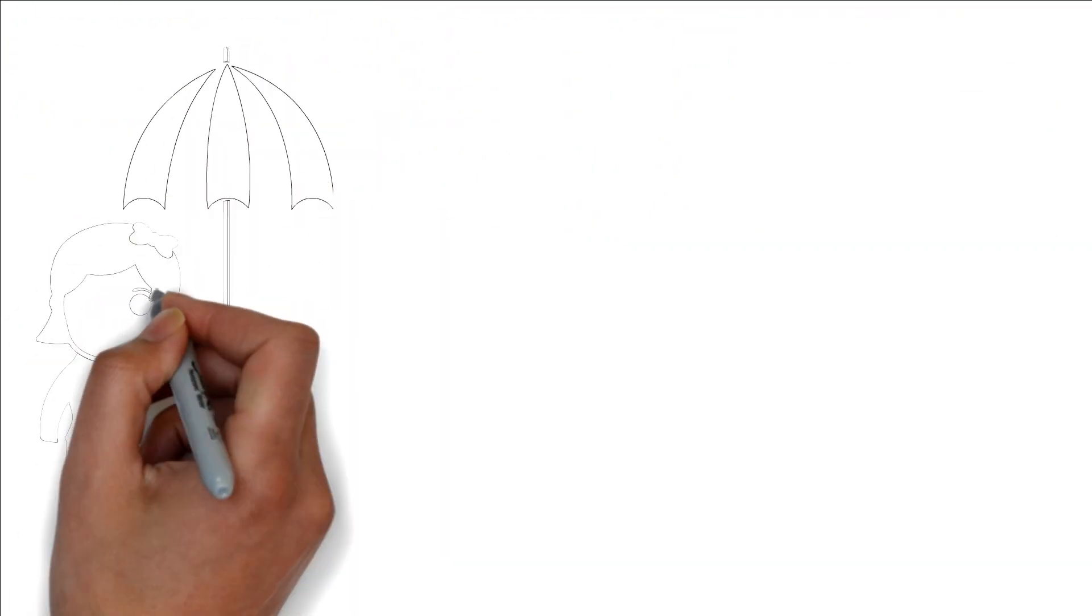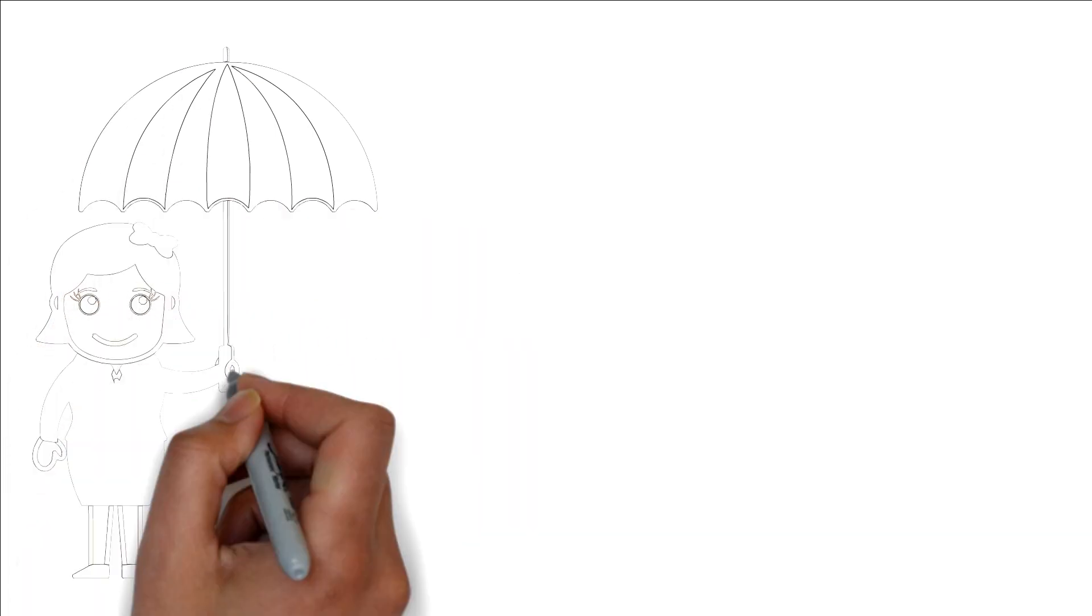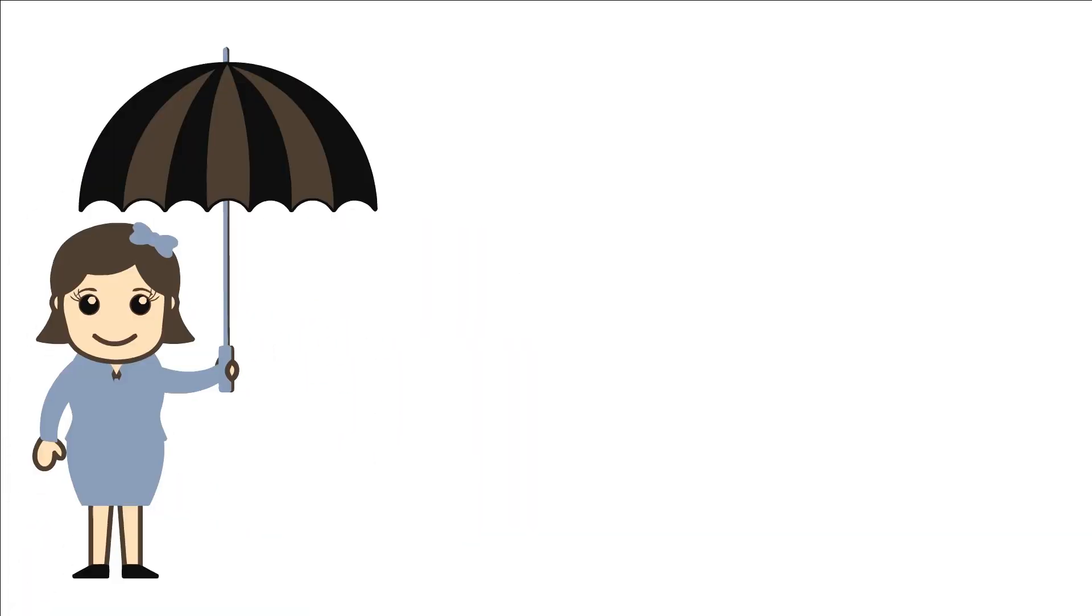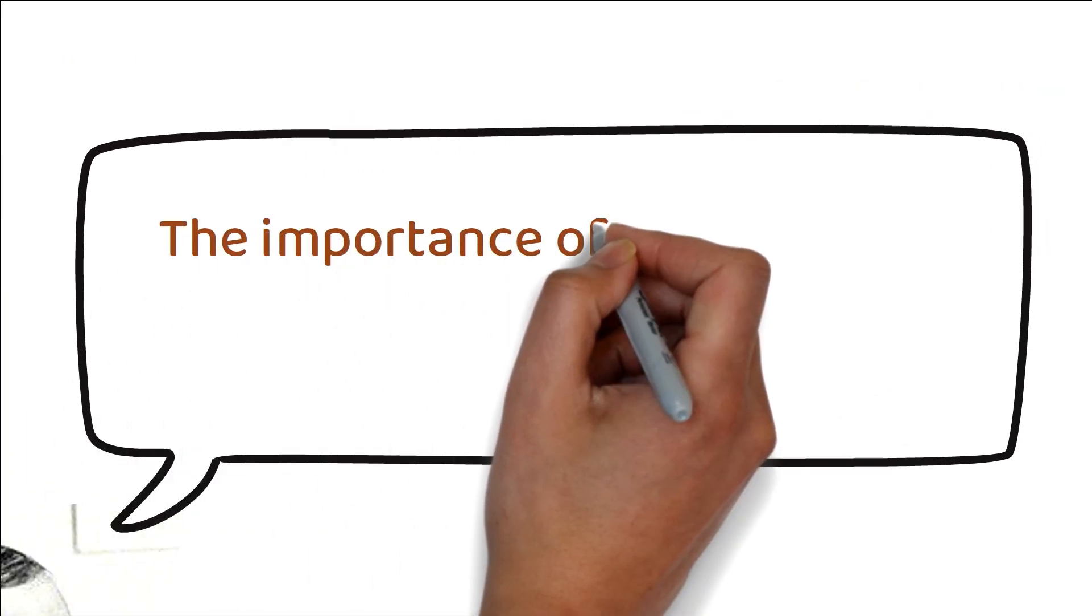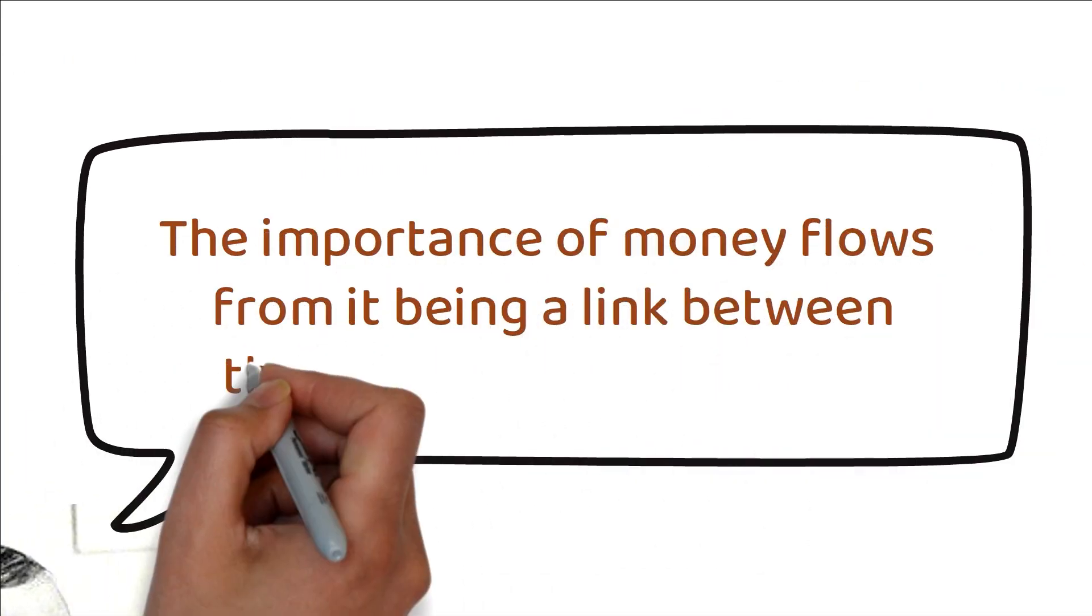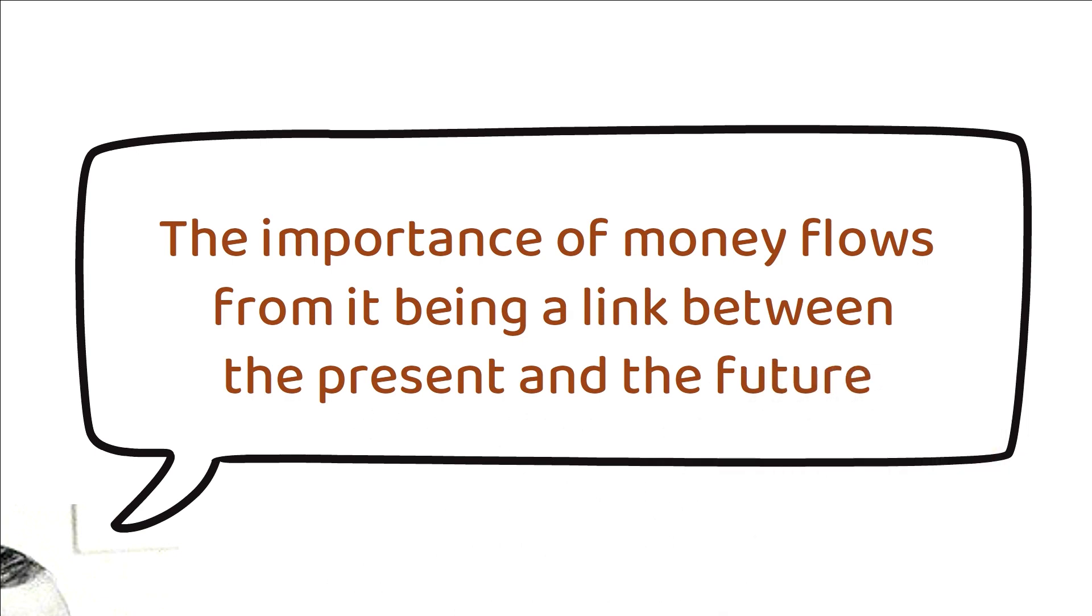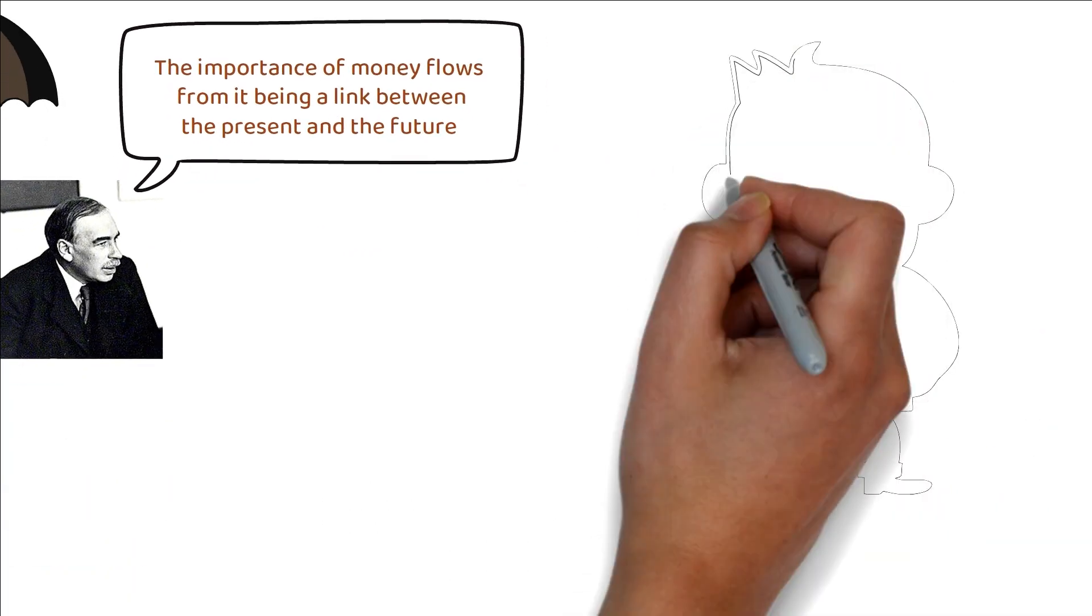That's where an emergency fund comes in. Think of it as a financial umbrella shielding you from life's unexpected storms. John Keynes, a renowned economist, once said, The importance of money flows from it being a link between the present and the future.